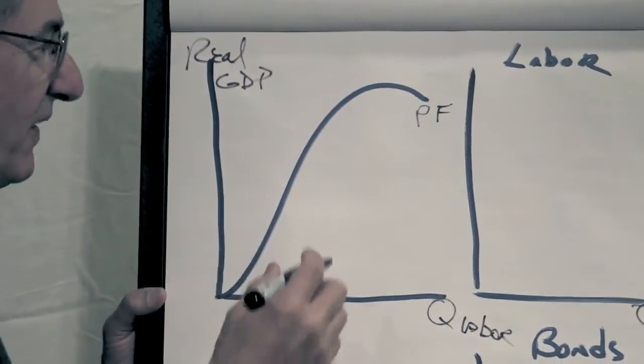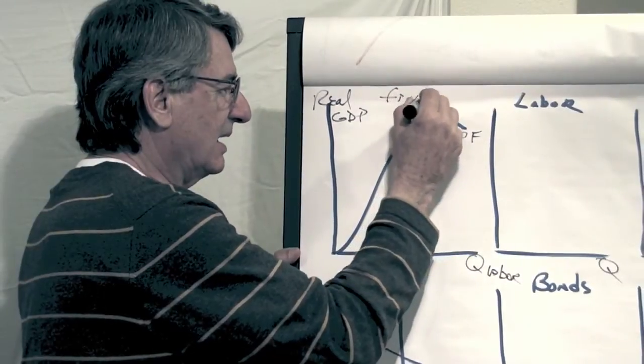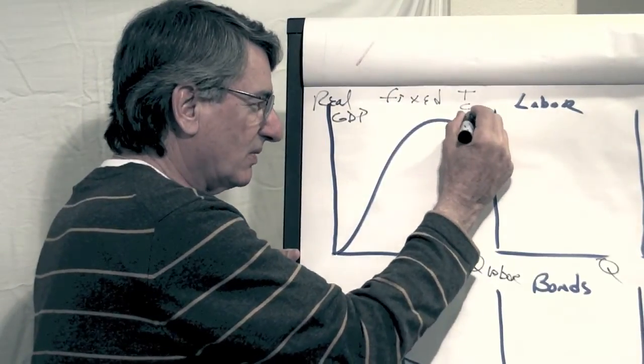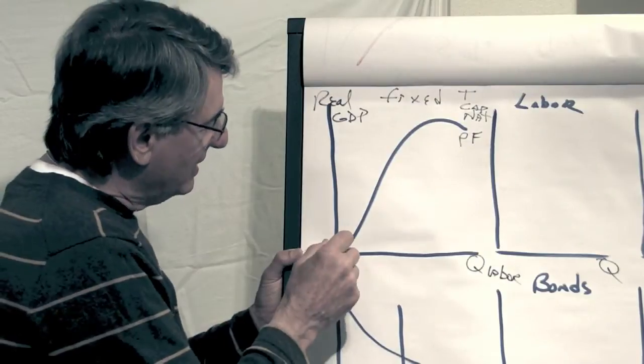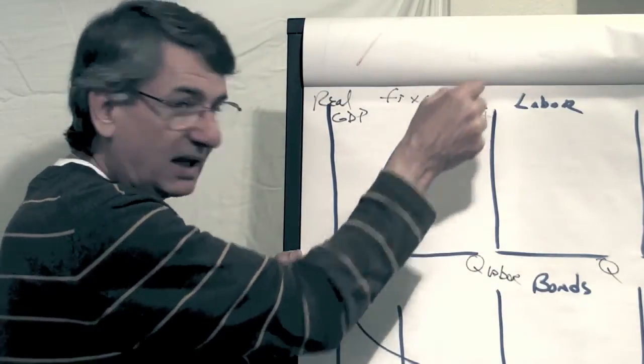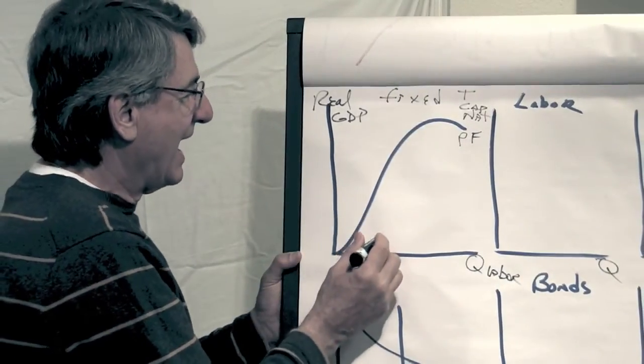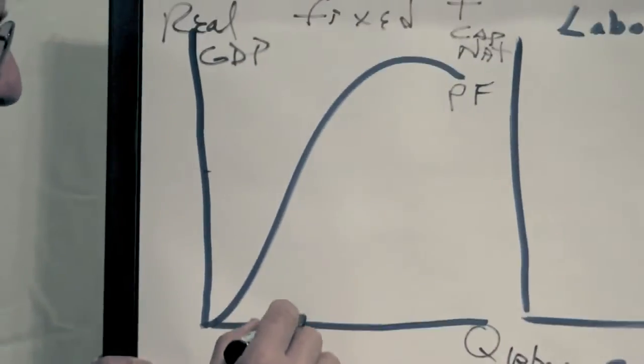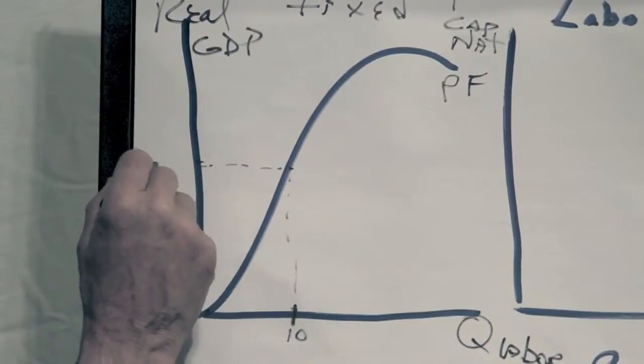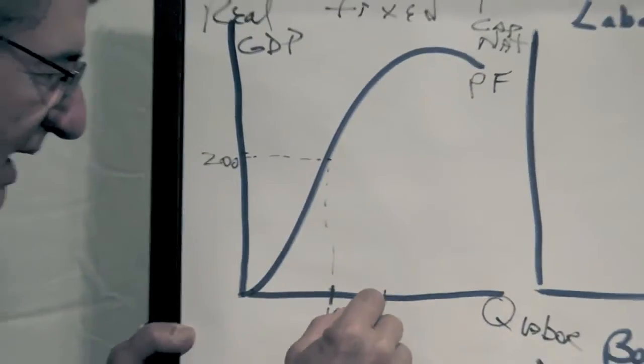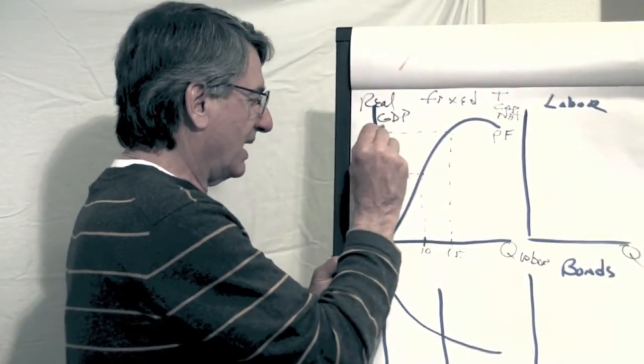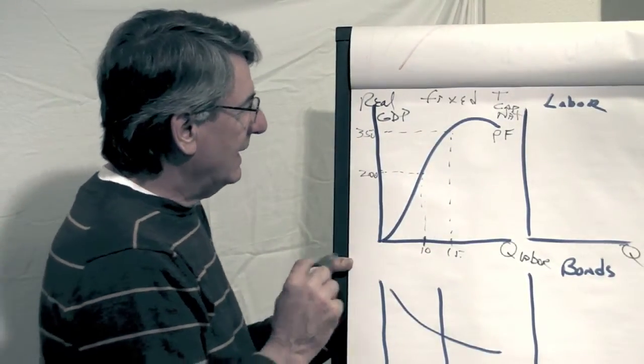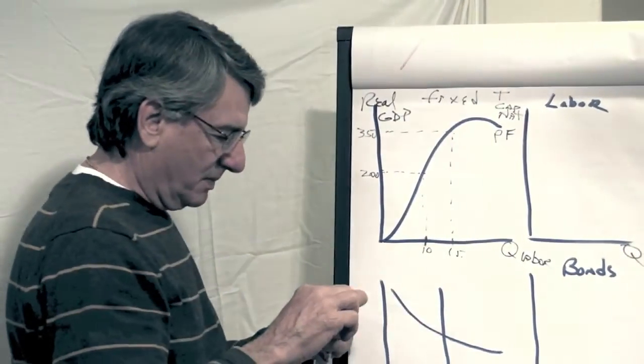Now what this says is that given what are fixed, assuming fixed technology, fixed capital, and fixed natural resources, this is the production function which is the relationship between labor inputs given the existing capital stock and technology and so forth. Labor inputs, how much output we get. So this says if there are 10 million workers, we plug them in here and this will give us $200 billion worth of output. If we have 15 million workers, oh look, we get $350 billion worth of output.